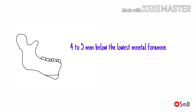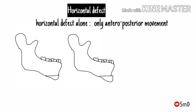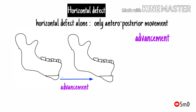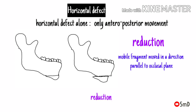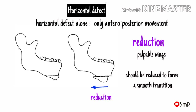Repositioning of the segment varies with the defect. When only a horizontal defect is considered, pure anteroposterior movement — either advancement or reduction — is needed. The movement of the mobile fragment should be parallel to the occlusal and mandibular planes. In anteroposterior reduction, a palpable wing may form at the posterior border of the mobilized fragment, which should be reduced before fixation.